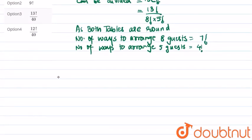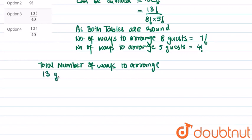So now, therefore, we can obtain the total number of ways to arrange 13 guests